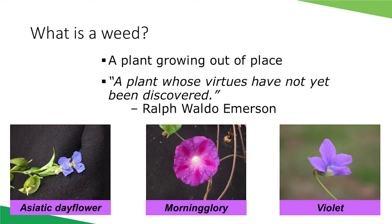Asiatic day flower has a nice true blue flower, but it can be aggressive. Morning glory is a vine that can be attractive in the right place, but it is a heavy seed producer, so after it goes to flower, you'll have it for years. So it depends on where the plant is growing, how it is affecting the intended use of the area, and who is looking at it as to whether it is a weed or not.